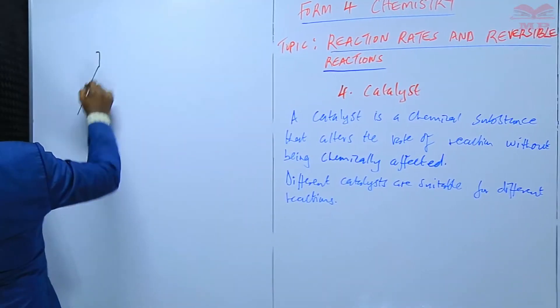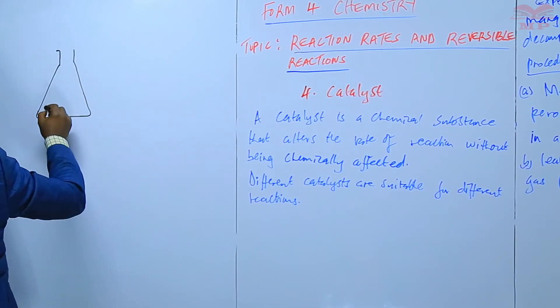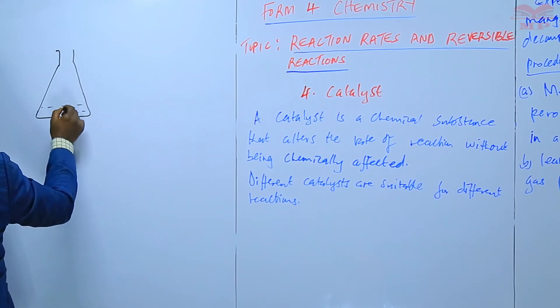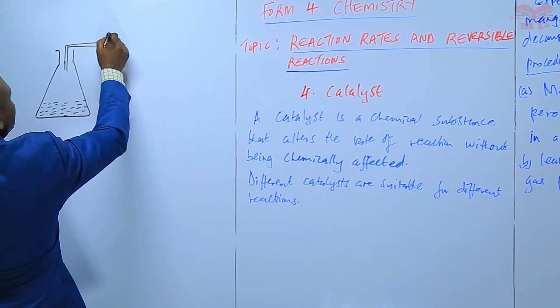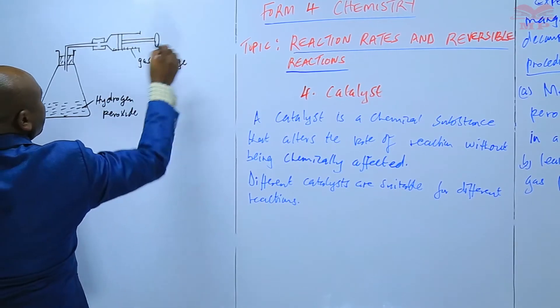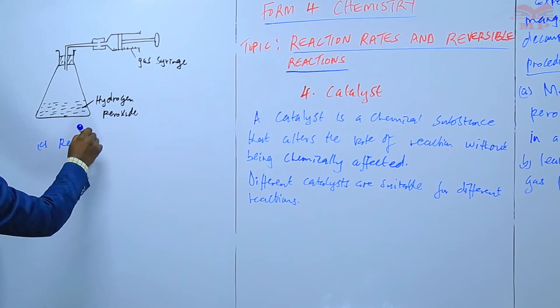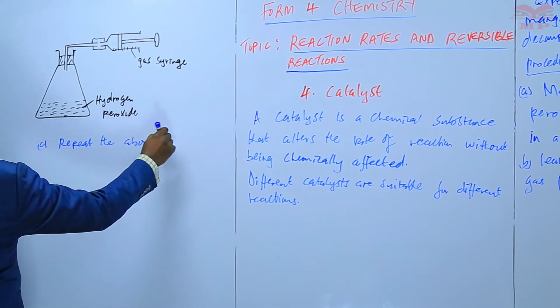So we'll have a conical flask that has hydrogen peroxide. That is the setup. Hydrogen peroxide, nothing is added, we just put it in a conical flask and then we collect the gas that is being produced in a gas syringe.